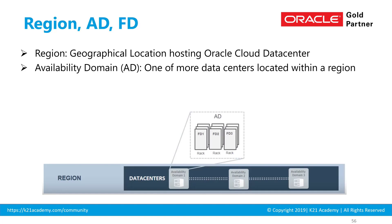Availability domains are one or more data centers located within a region. For example, you have a region in Phoenix in the US. Within that Phoenix region, you have three data centers marked as availability domain one, two, or three.